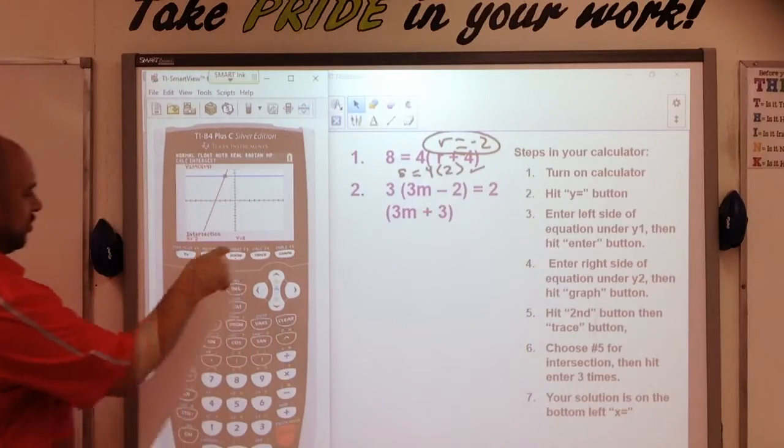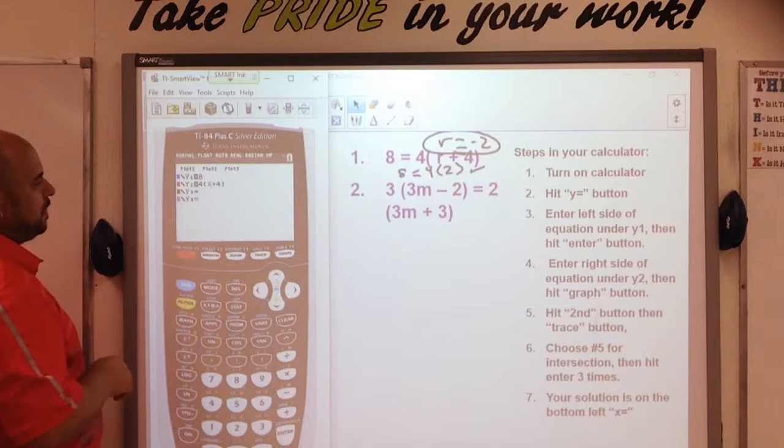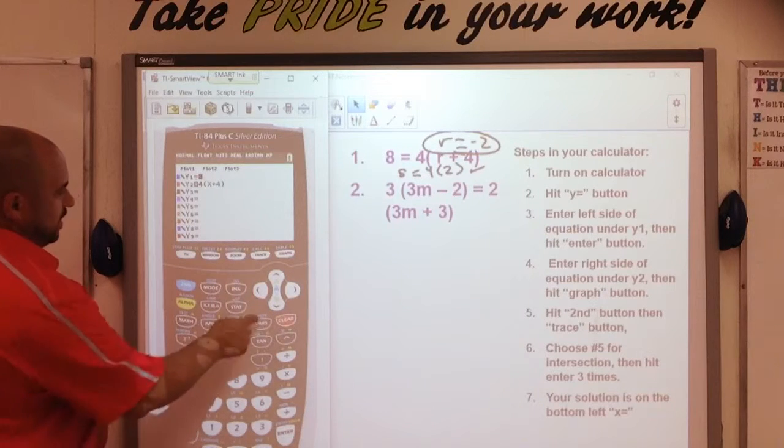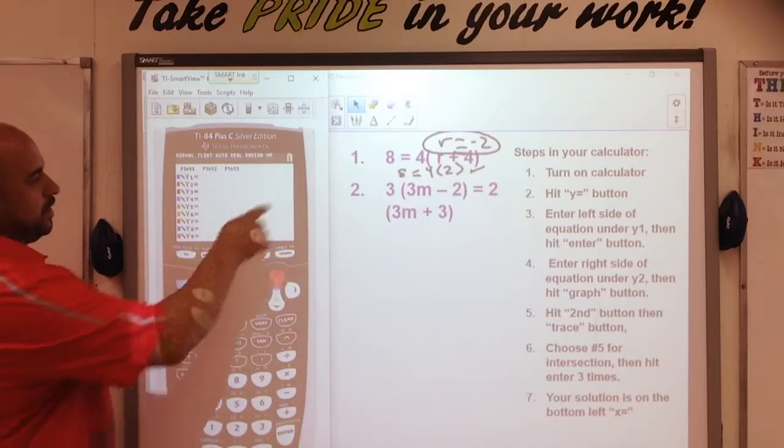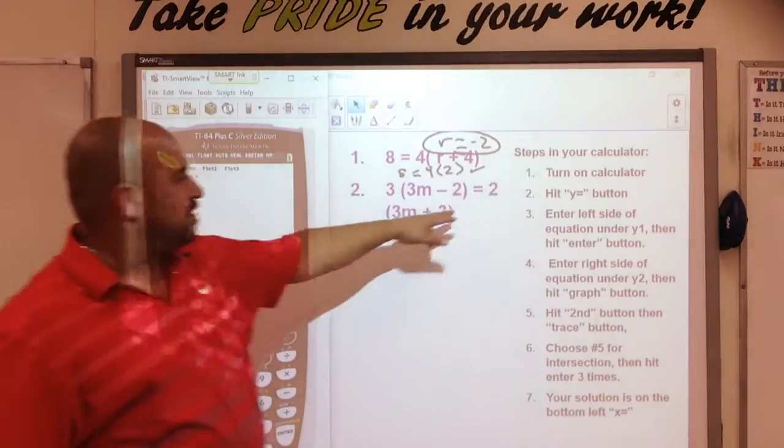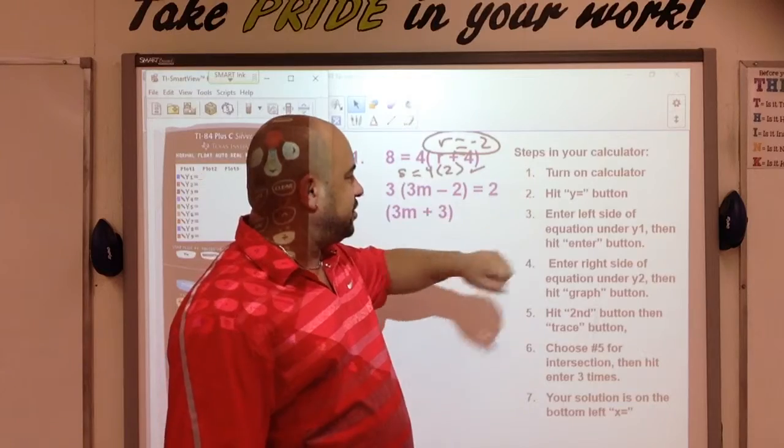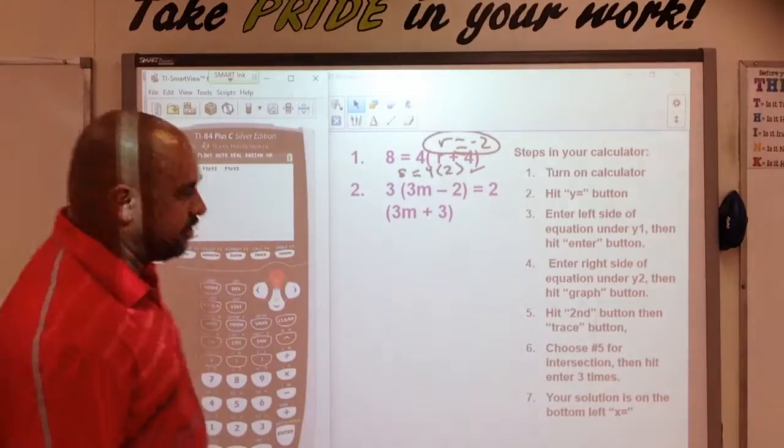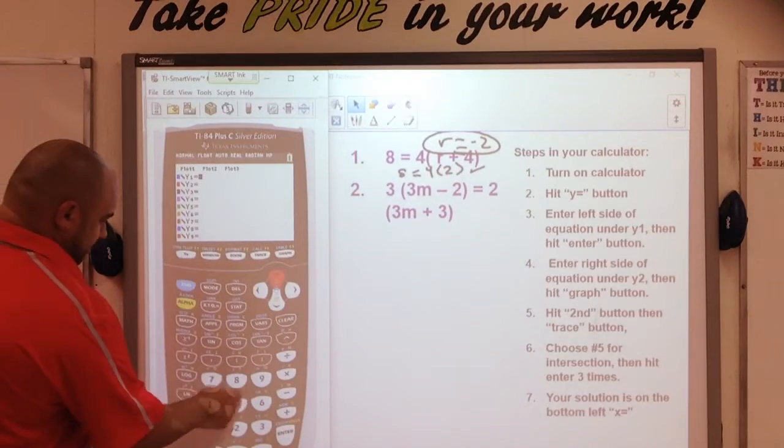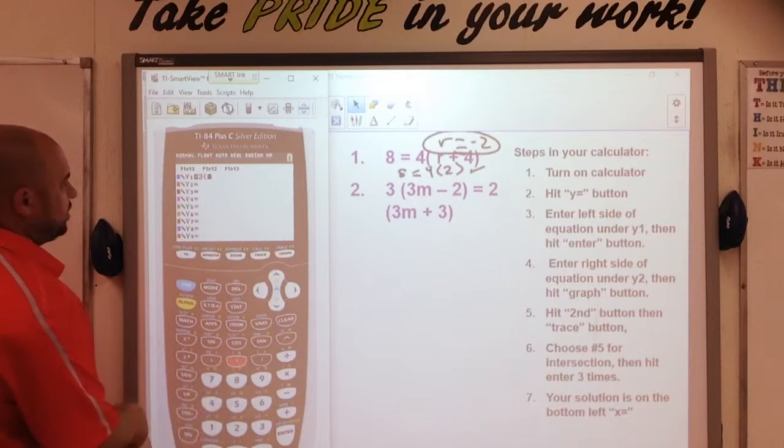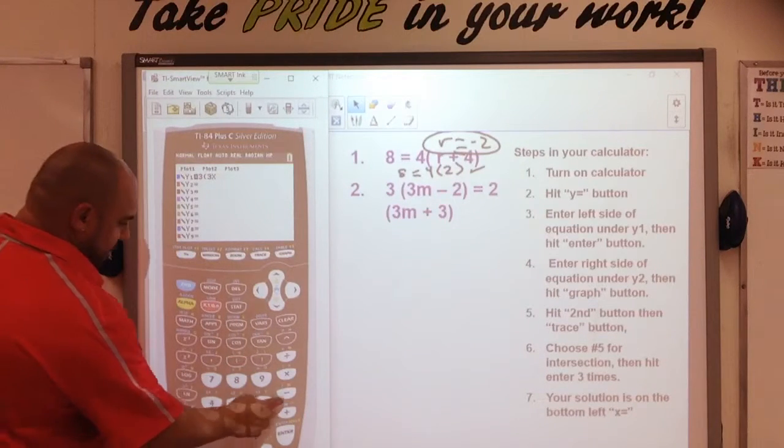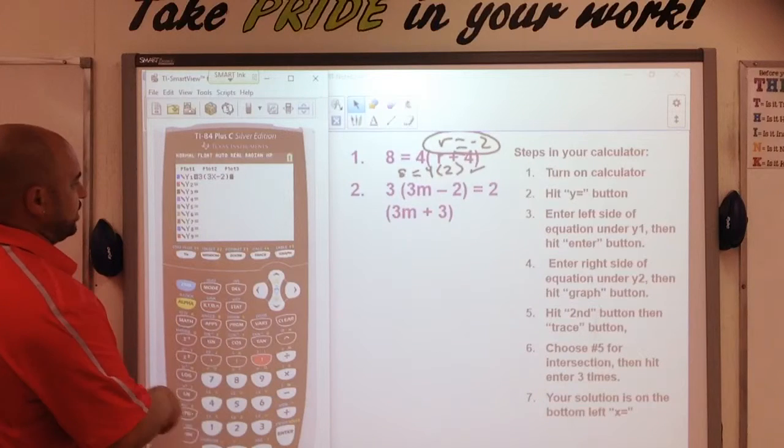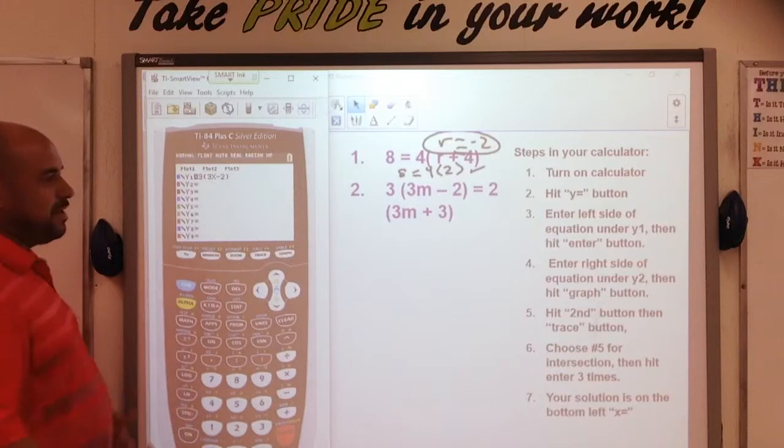Now, I'm going to go back to y equals. I'm going to hit clear. I'm going to go down and hit clear again. Now, I'm going to go back up to y1. Let's enter the left side. So, I've done step 1. I've done step 2. Let's do step number 3. So, I have 3 in parentheses. I'm going to replace m with x. So, 3x minus 2 in parentheses. Enter. That's my left side.